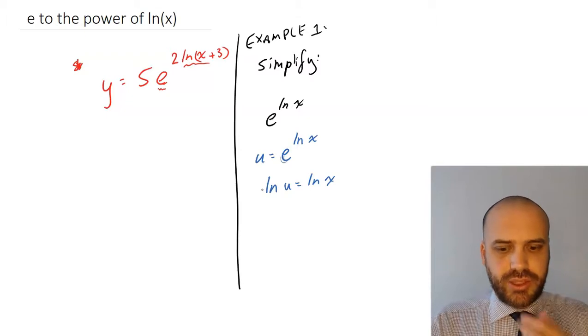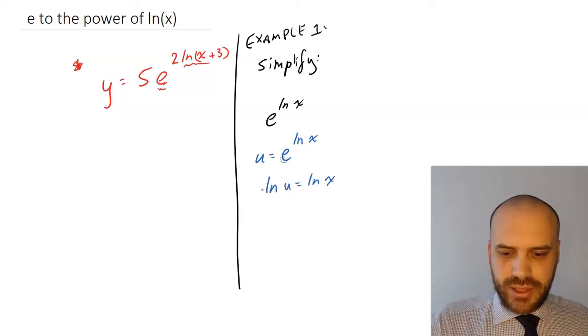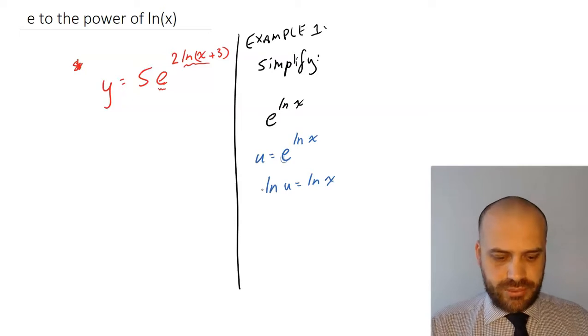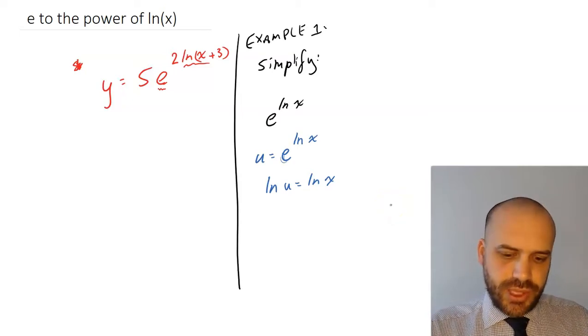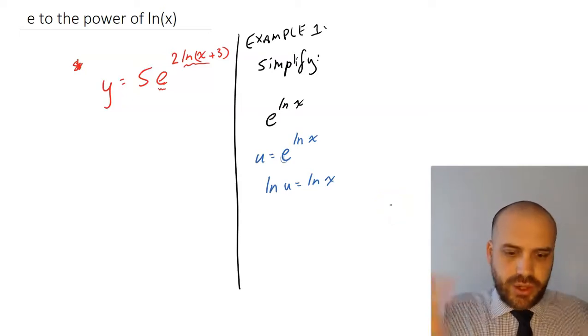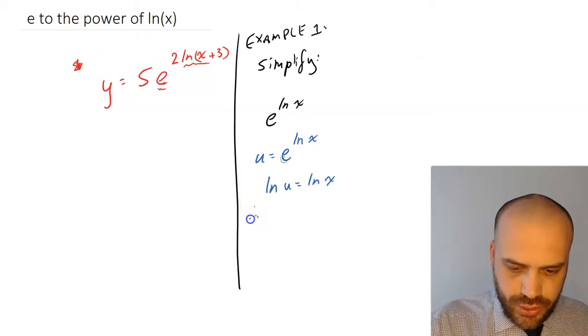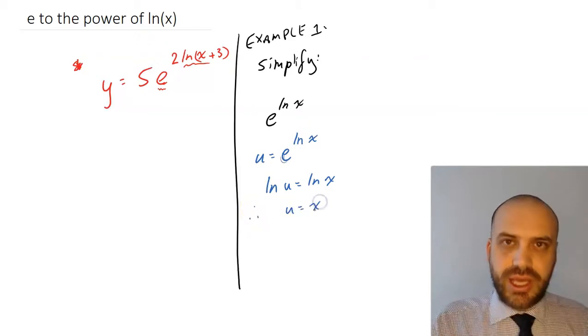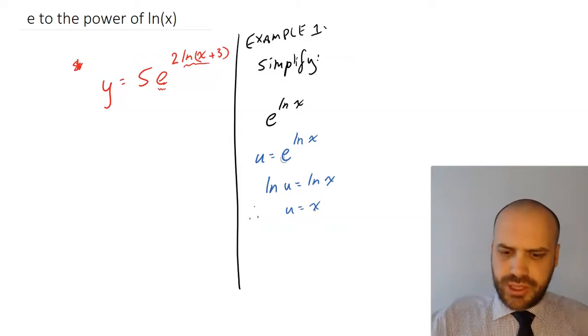So we see that log base e is just ln. So we're left with ln u equals ln x. Now, remember, we were trying to find u here to begin with. And if ln u equals ln x, then we can only conclude that u must be equal to x.